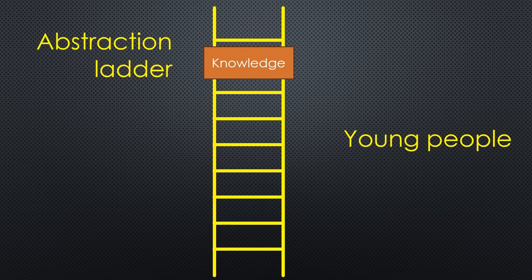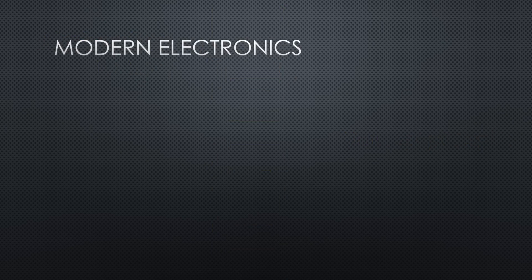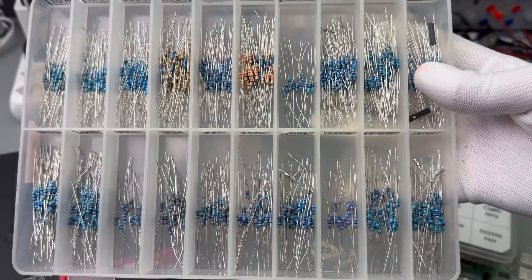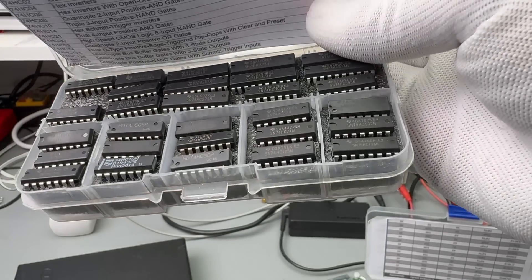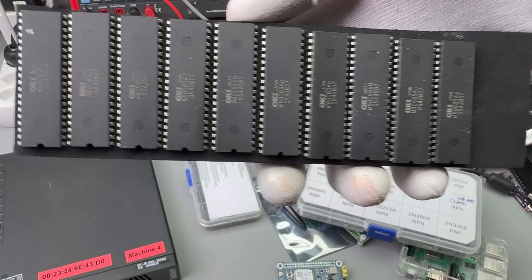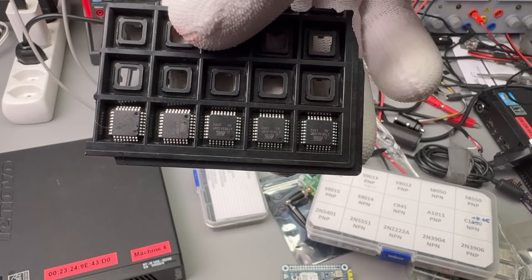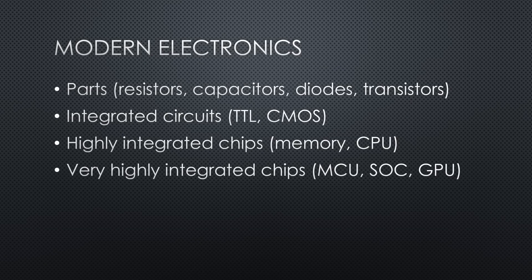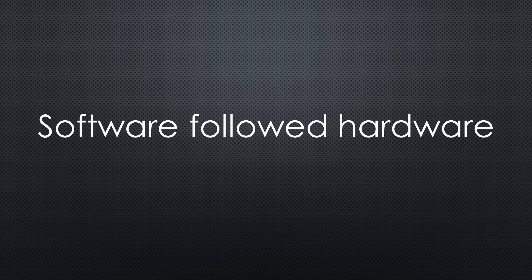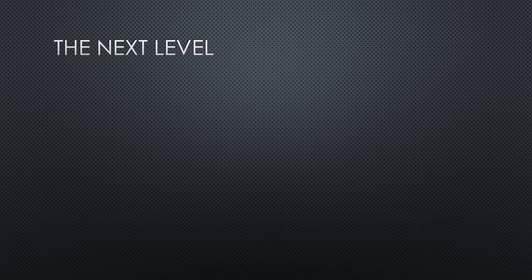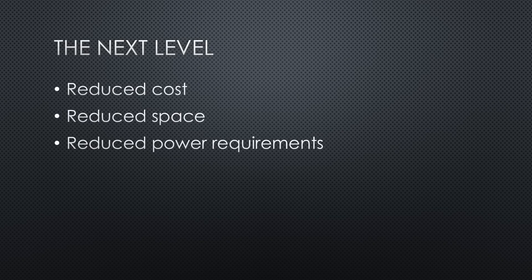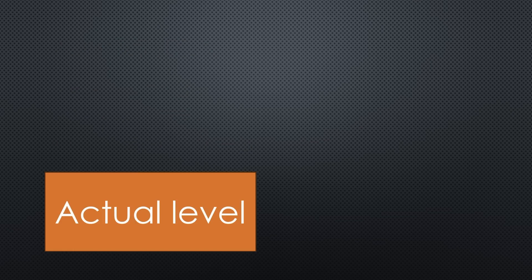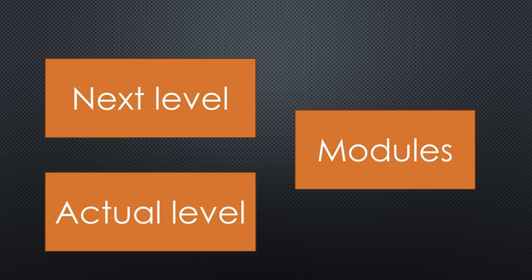In modern electronics, we had a few abstraction levels: parts like resistors or transistors; integrated circuits like the famous TTL chips; highly integrated chips like memories or CPUs; and very highly integrated chips with different functions like microcontrollers or systems on a chip, where whole computers including memory and I/O are on one chip. Software advanced in similar steps together with the new possibilities hardware offered. Each next level of abstraction drove down the cost, space, and power requirements, and increased the quality by factors. One important glue between these levels is modules. They exist on all levels and anticipate the next abstraction level, because they assemble or integrate lower-level parts to create a function on the next level.